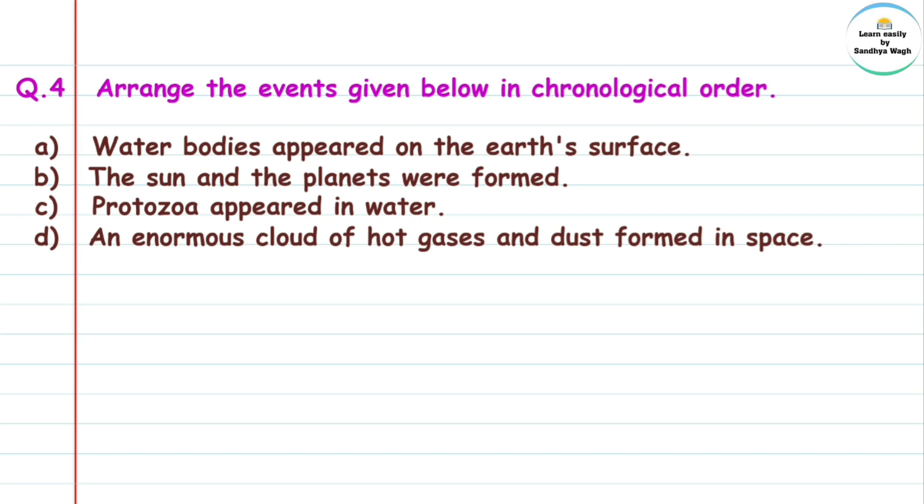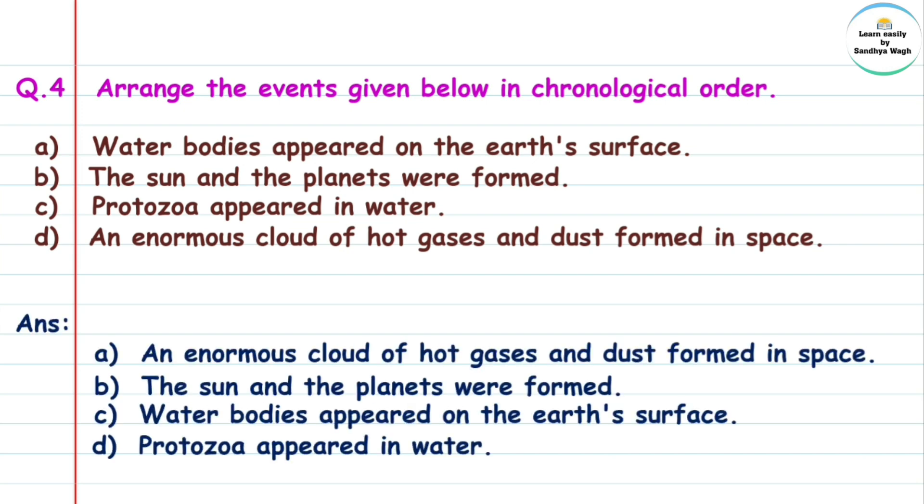The correct chronological order is: First, an enormous cloud of hot gases and dust formed in space. Then the sun and planets were formed. Then water bodies appeared on the Earth's surface. Finally, protozoa appeared in water.